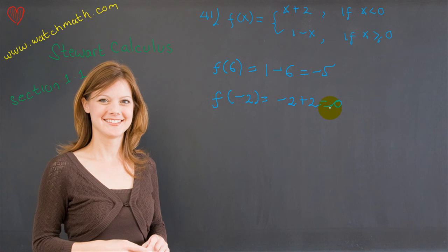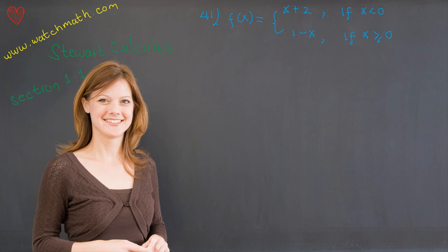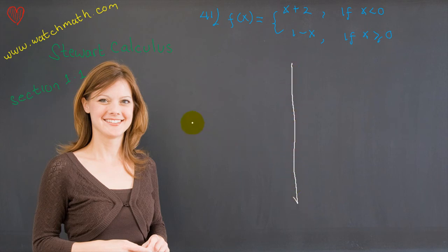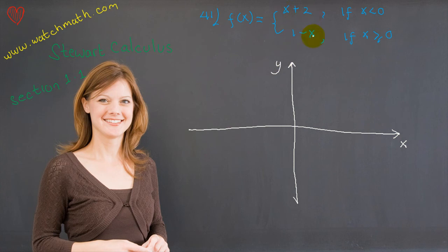That's just some review about how we compute the value of a piecewise function. Now let us see how to sketch the graph of f(x). Notice that x plus 2 is a linear function and also 1 minus x is a linear function. We know that the graph of a linear function is a straight line. So let us draw the x and y axes.